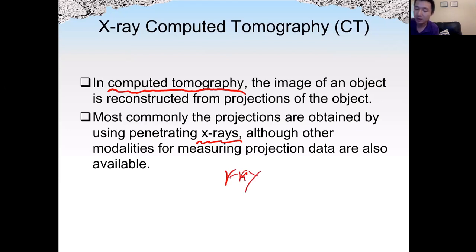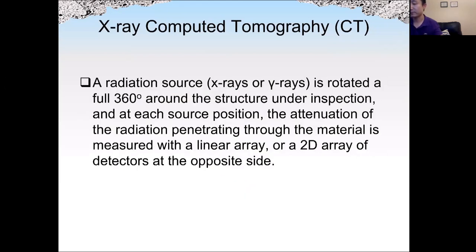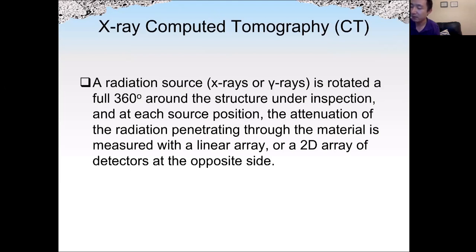A 3D image can be reconstructed from many slices. The radiation source is rotated around the structure for a full 360 degrees. At each source position, the attenuation of radiation penetrating through the material is measured, generating a 2D image. The computer then generates a 3D image based on these many slices. The slices can be parallel or taken at different angles.